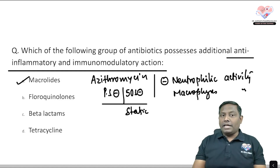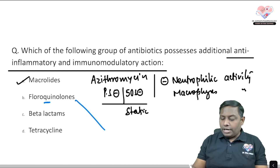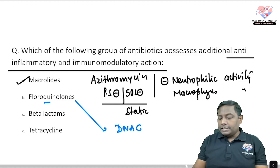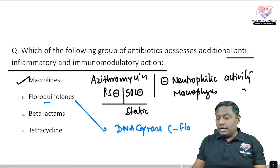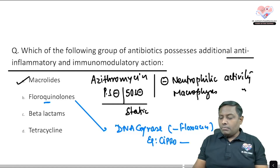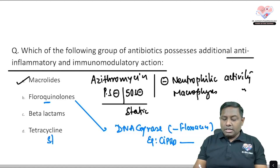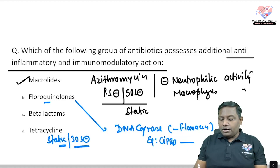Fluoroquinolones are fluorinated quinolones and DNA gyrase inhibitors. All drug names in this class end with '-floxacin' — examples include ciprofloxacin, moxifloxacin, and ofloxacin. Beta-lactams are cell wall inhibitors with bactericidal nature. Tetracyclines are bacteriostatic and are 30S ribosomal subunit inhibitors. None of these have immunomodulatory properties.